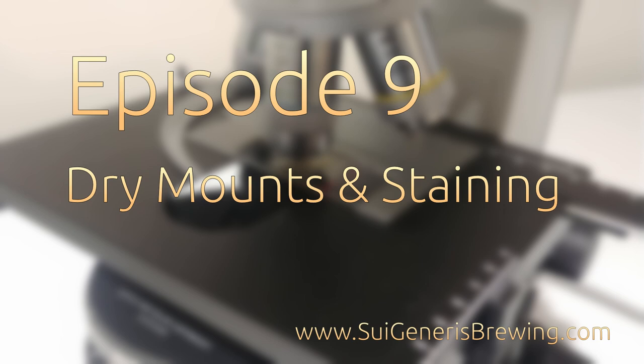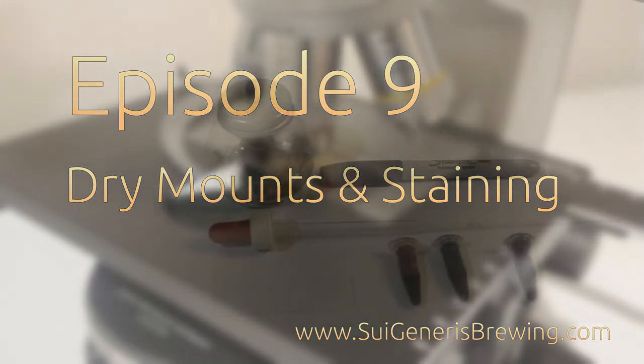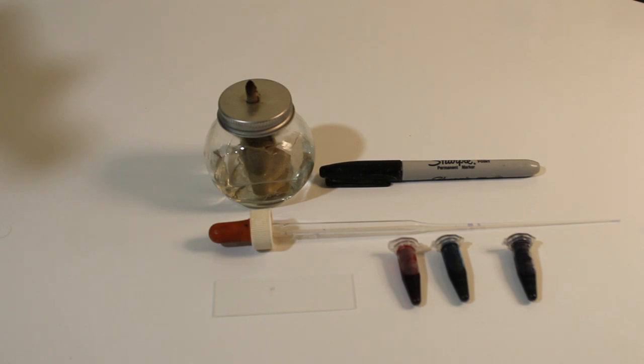Welcome to Episode 9 of Microbrews, my new video series on how to make the best use of a microscope in your home or craft brewery. In this episode I'll be showing you how to prepare a dry mount and then use chemical dyes to stain your sample in order to better view yeast and bacteria in your brewery samples.